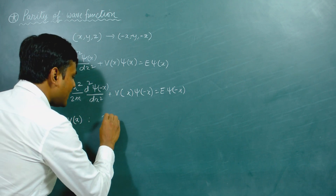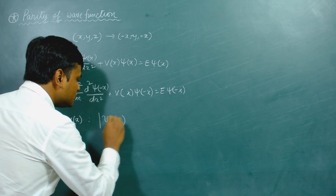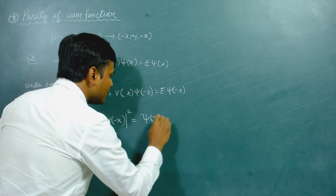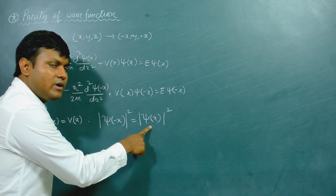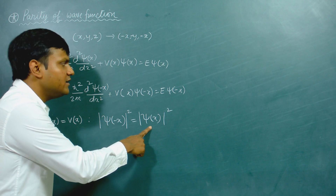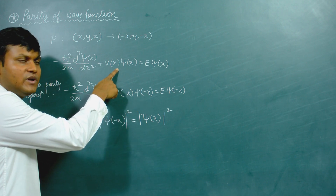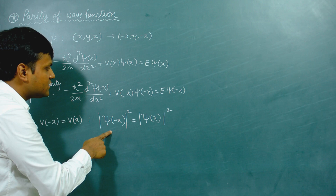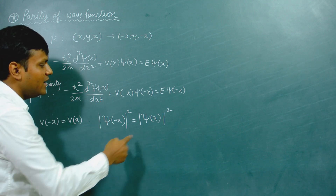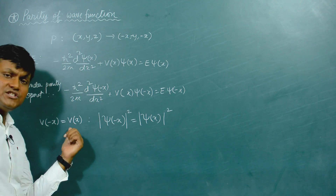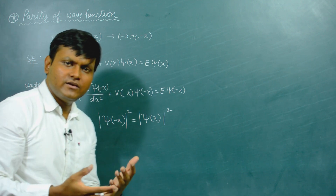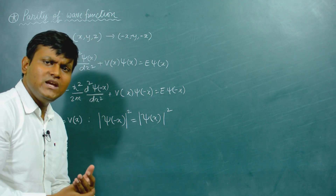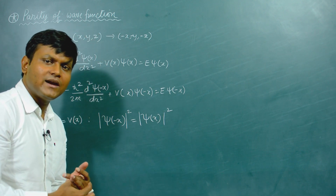This is obvious because if the potential is itself symmetric with respect to reflection, then the different physical observable quantities should remain invariant. So one very important conclusion we can draw is that the probability distribution of both cases should remain the same: |ψ(−x)|² should equal |ψ(x)|². Because the potential is symmetric with respect to parity operation, the probability distribution should also be invariant under parity operation.